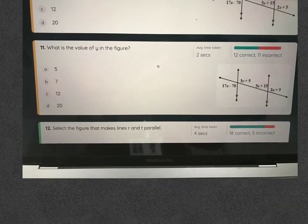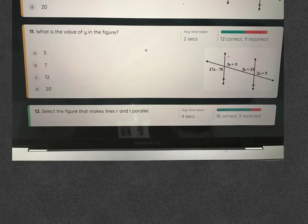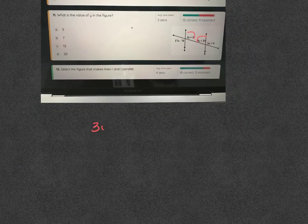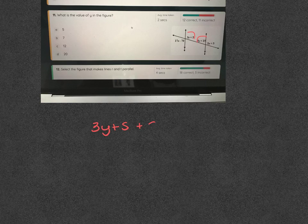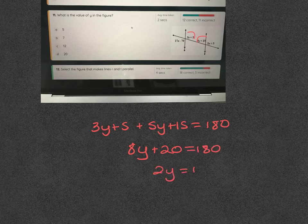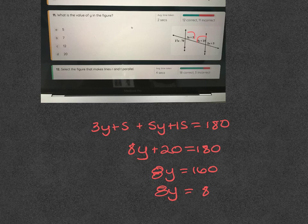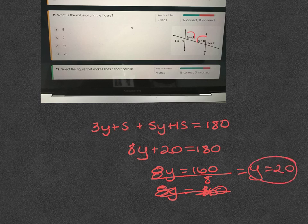Next one said, what's the value of Y in the figure? So what's the relationship between the Y angles? Consecutive interior angles? Equal to 180. 3Y plus 5 plus 5Y plus 15 equals 180. 8Y plus 20 equals 180. 8Y equals 160. Y equals? 8Y. I'm doing it ahead of my head. That's what I did. 160, so then divide by 8, Y is 20. I put it back in and didn't get anything. Okay, careful. Just pay attention to what it's asking for.